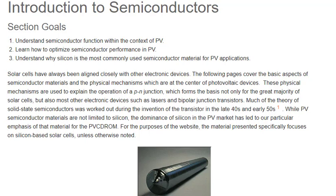Solar cells have always been aligned closely with other electronic devices. The following pages cover the basic aspects of semiconductor materials and the physical mechanisms which are at the center of photovoltaic devices. These physical mechanisms are used to explain the operation of a PN junction, which forms the basis not only for the great majority of solar cells, but also most other electronic devices such as lasers and bipolar junction transistors.